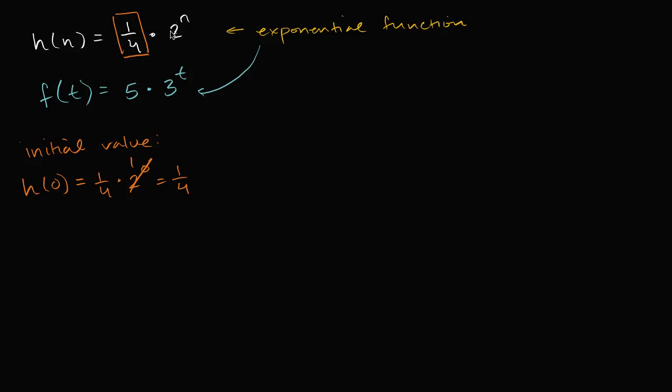And we'll come up with the name for this number as well. But let's see if this was true over here for f of t. So if we look at its initial value, f of zero is going to be 5 times 3 to the zero power. And the same thing again. 3 to the zero is just one. Five times one is just five.